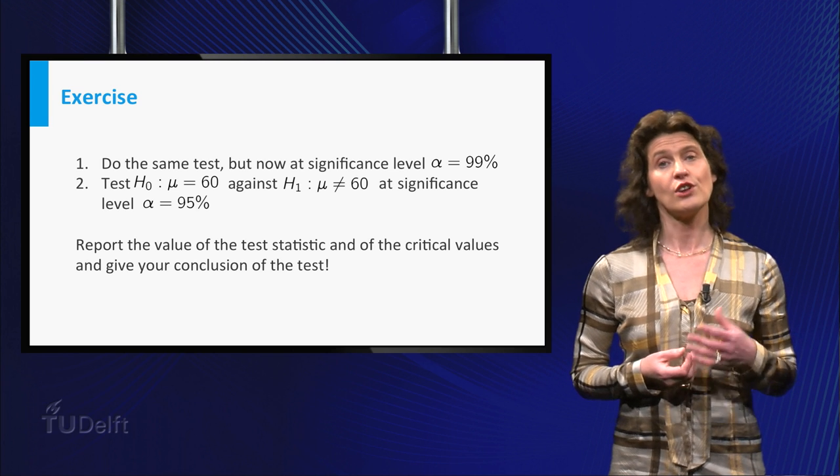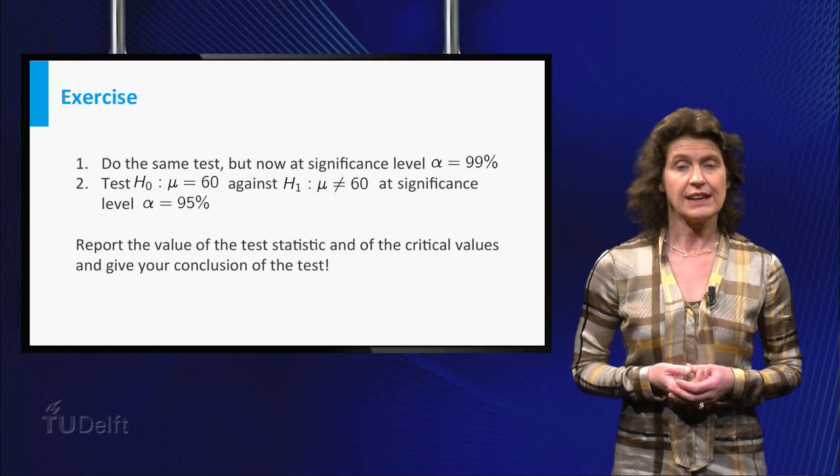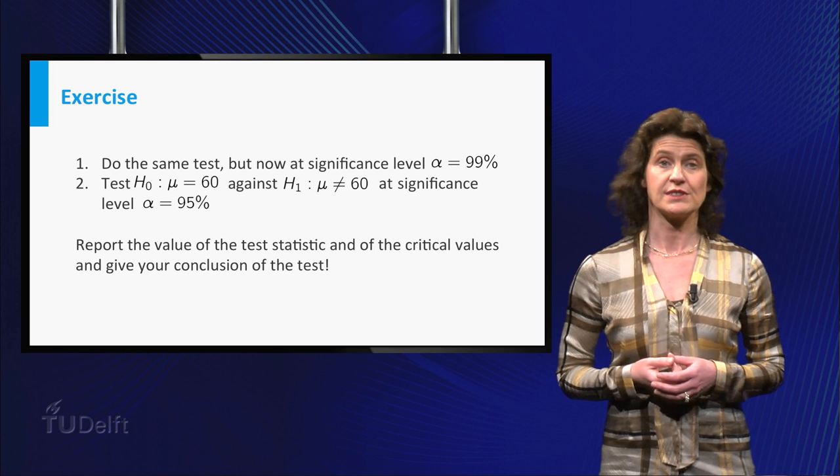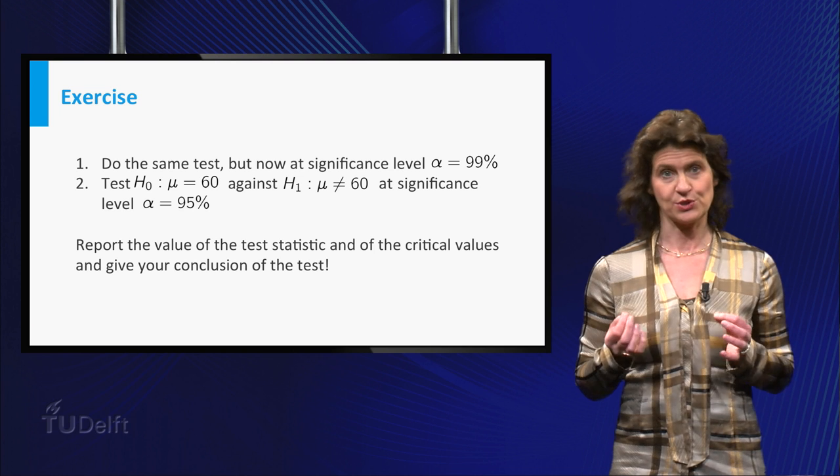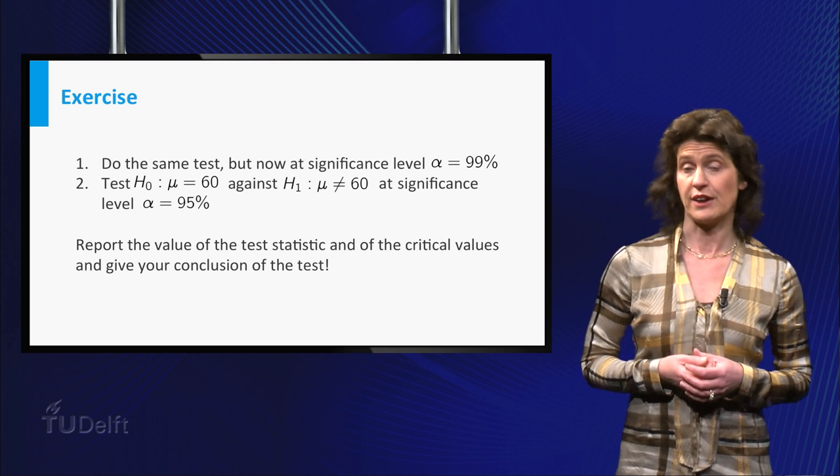Test the null hypothesis that mu equals 60 against the alternative hypothesis that mu is not equal to 60 at a significance level of 95 percent.